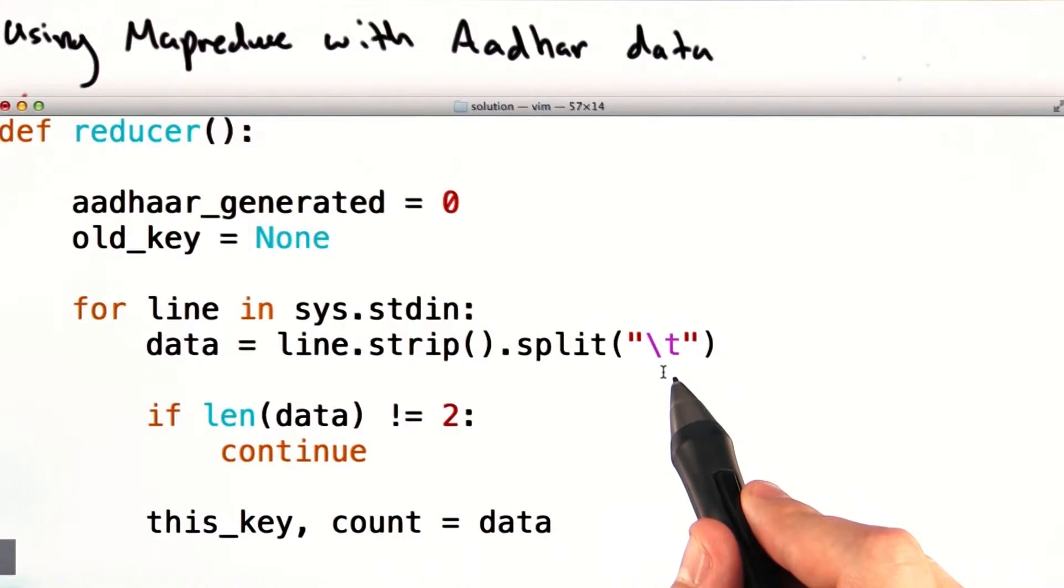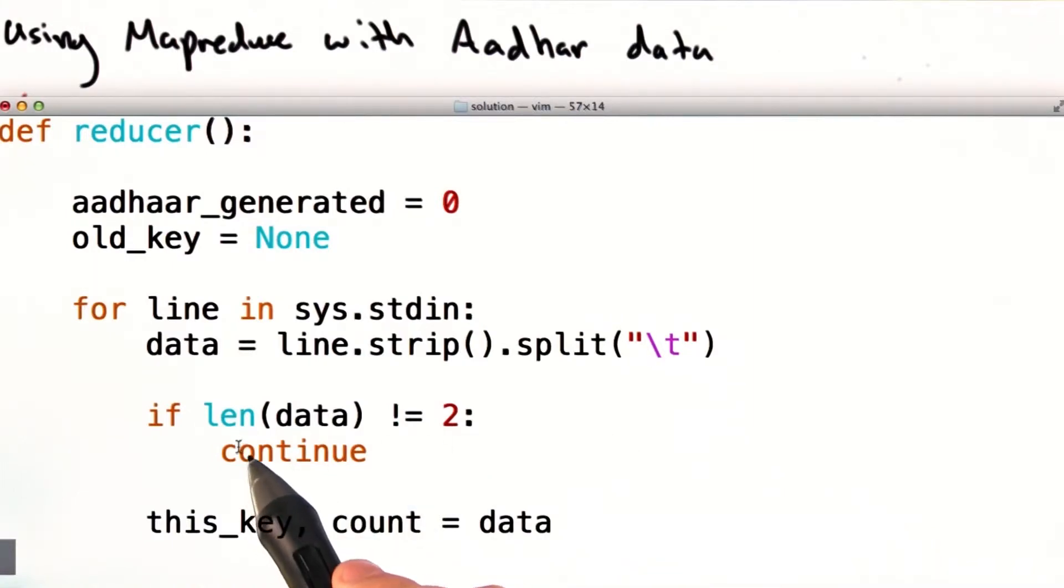Note that we split on the tab, which we input into the output of our mapper. If for some reason data is less than or greater than length two, we continue on. There's something wrong with this key value pair, and we shouldn't process it.